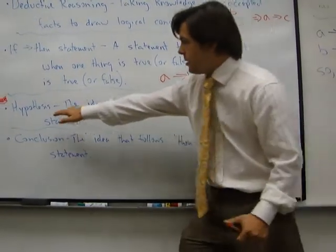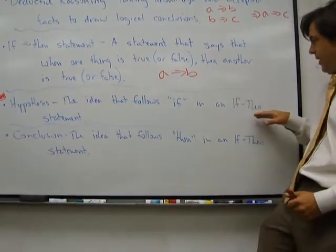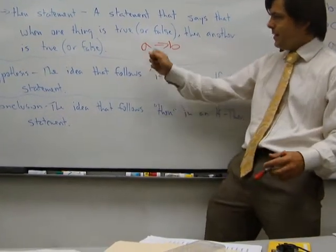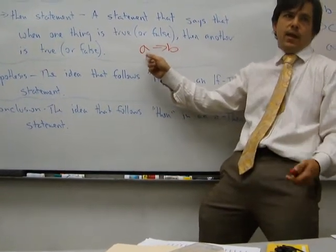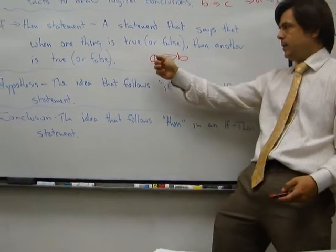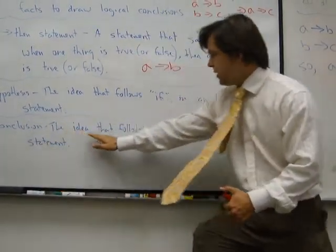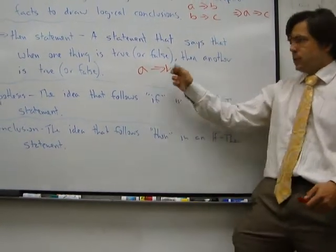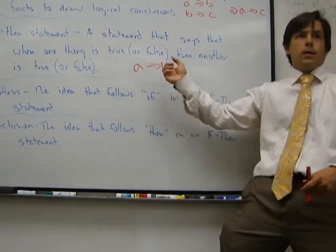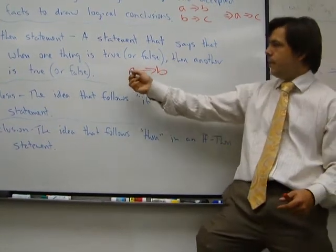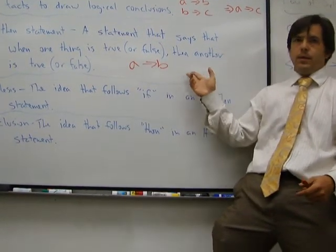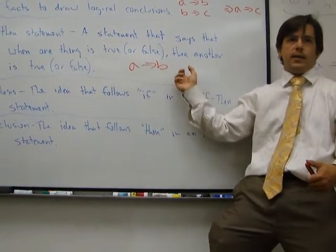Okay, so a hypothesis. A hypothesis is the idea that follows the if in an if-then statement. In this example, the hypothesis is A, and it's the thing that causes something else to happen. The conclusion is the idea that follows then in the if-then statement. So in this example, again, the conclusion is B. So this would be read as: if A, then B. In other words, A causes B to happen.